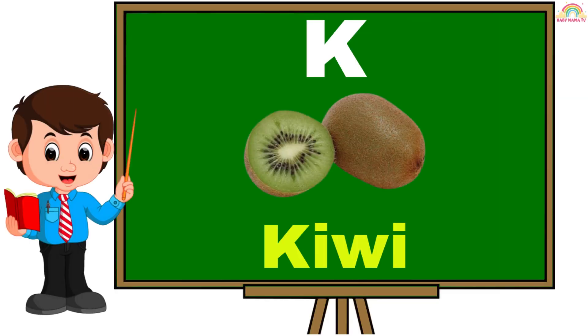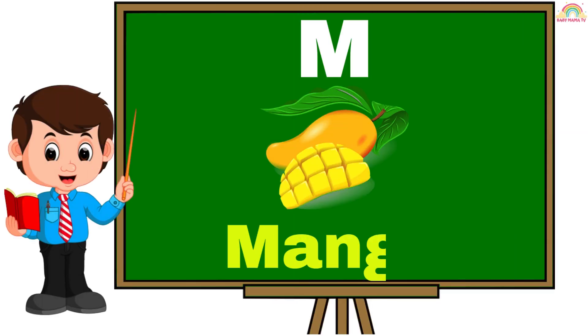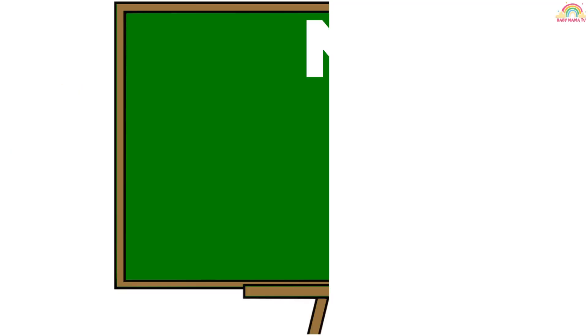J. J for jamun. K. K for kiwi. L. L for litchi. M. M for mango.